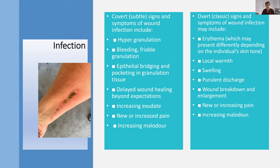When epithelialisation contracts from wound edges inward, you can get pocketing — bridging and pocketing in the middle of the wound, which is not healthy. The wound is delayed, we get more exudate — what does it look like? Is there odour? What's the colour? Is it thick or thin? And pain — what is the patient telling us? Always listen to what patients are telling us. As the wound infection increases, we get to the overt signs — classic signs of wound infection you'll probably recognise.